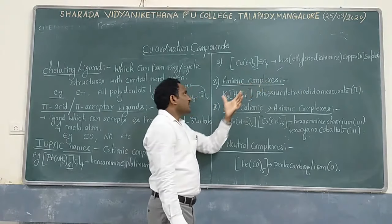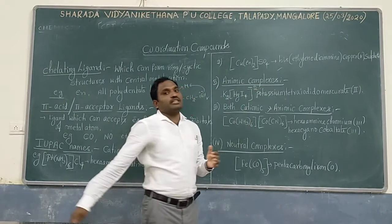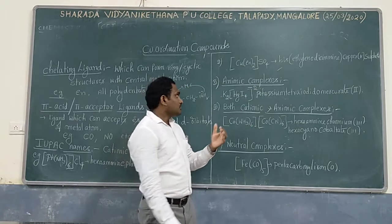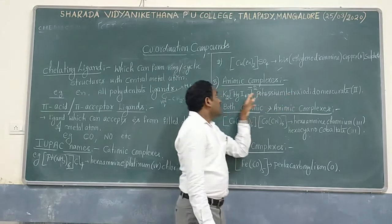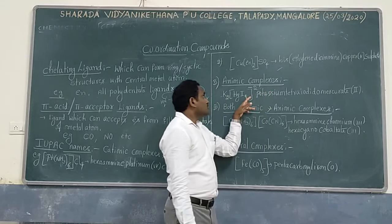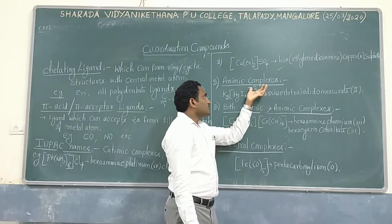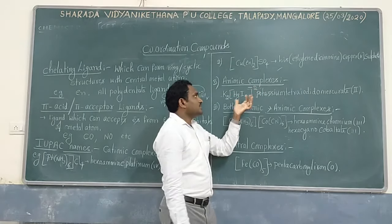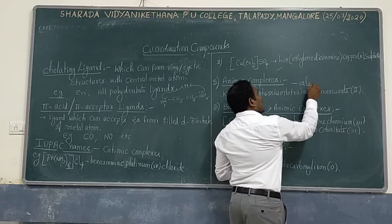Next: anionic complex. Anionic complex means the coordination sphere gets a negative charge. In this case, first whatever the positive ion is there, that is what you mention — here it is potassium. Then: potassium tetraiodido. When the coordination sphere gets a negative charge, the particular metal gets the suffix '-ate'; we need to add '-ate'.